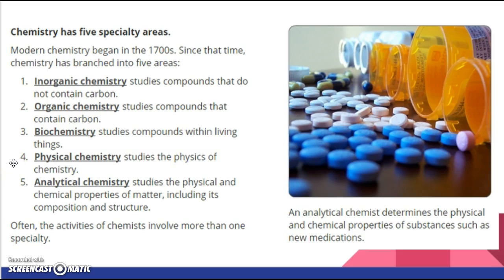Okay, your body has to do a lot to keep you alive to run down the block. Physical chemistry studies the physics of chemistry, that has a lot to do with heat. And analytical chemistry studies the physical and chemical properties of matter, including its composition and structure. Analytical chemistry, I like to think of as being really, really picky. So for example, the chemists that make new medications, they would be analytical chemists because they have to be very, very precise and perfect in all their measurements and everything they do. Often the activities of chemists involve more than one speciality, so they do relate together. But like I said, people usually specialize.